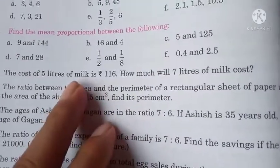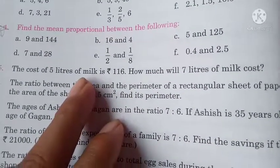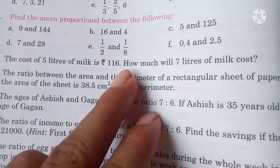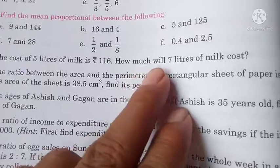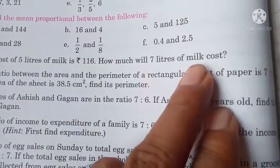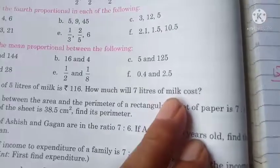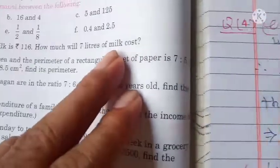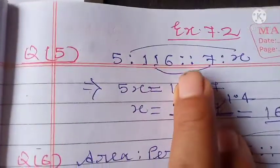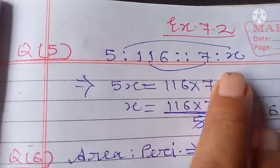We will use ratio and proportion for this milk problem. We will set up the ratio 5:116 proportional to 7:x. Let us consider x as the unknown. So we write the proportion as 5:116::7:x.